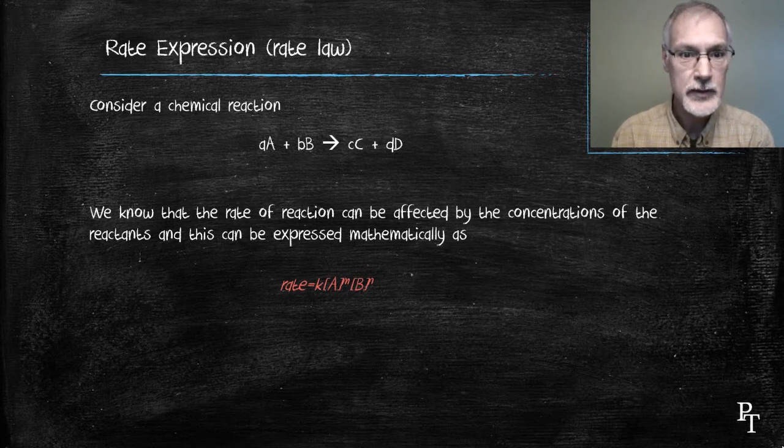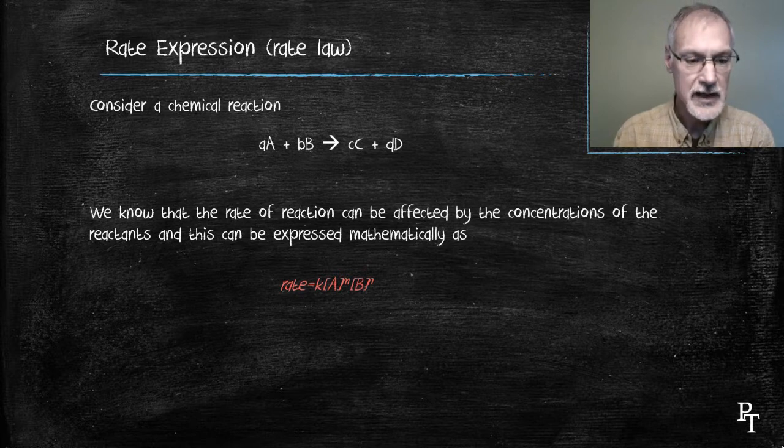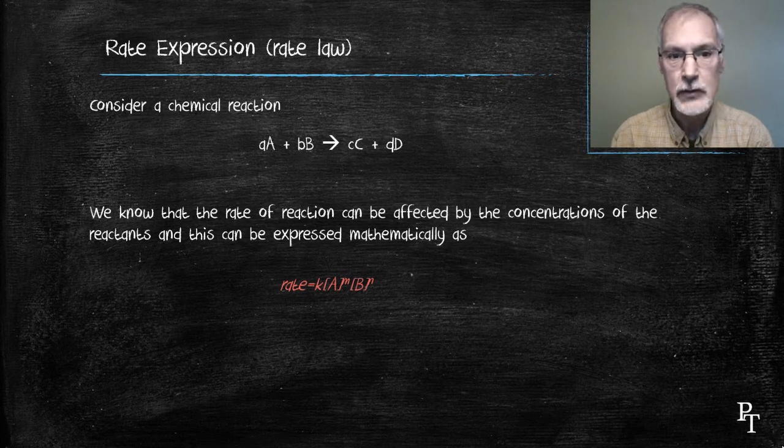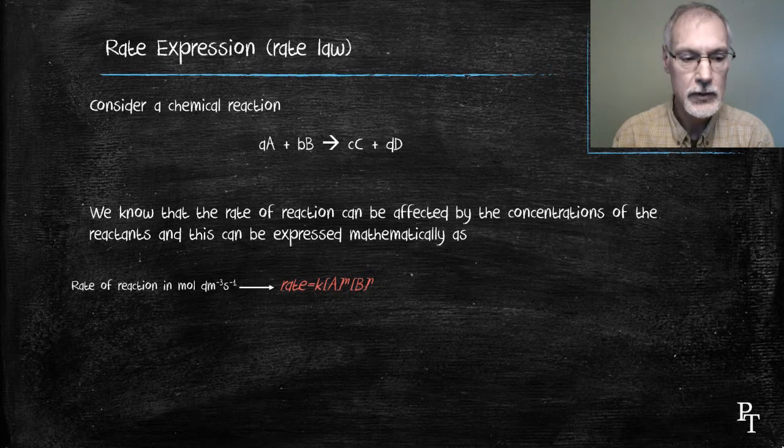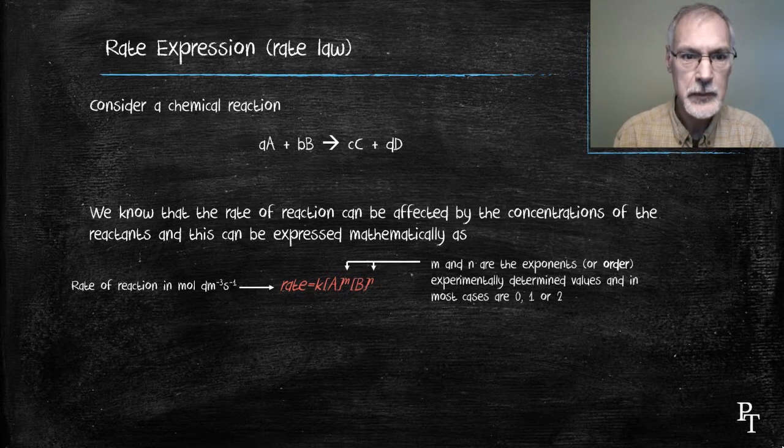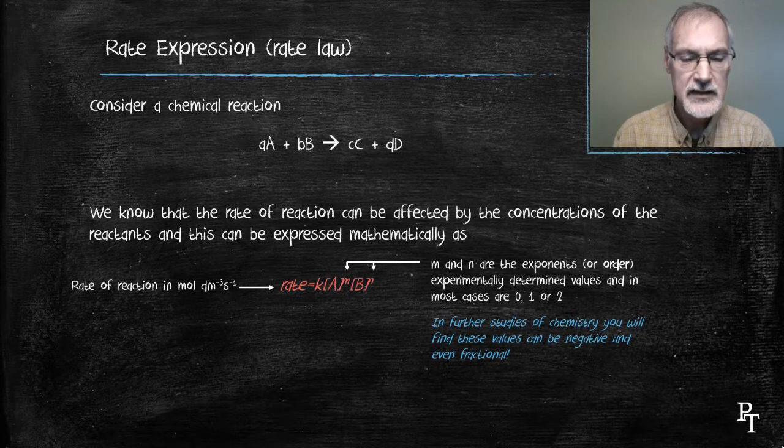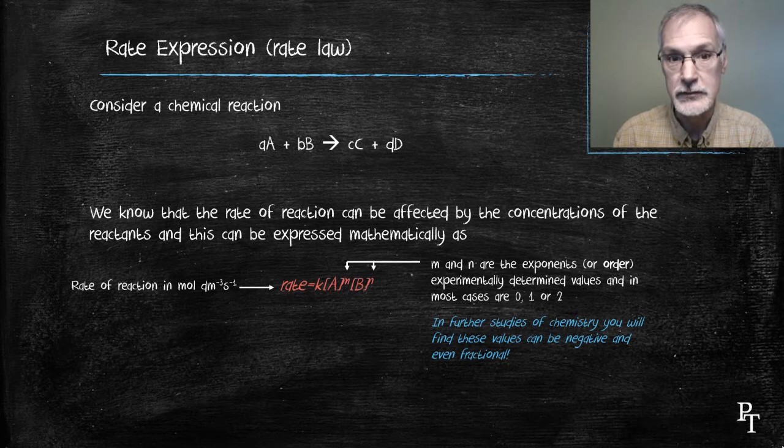The rate expression is something that incorporates all of these. First off, we have the rate, typically measured in moles per liter per second, or moles per decimeter cubed per second. We have two experimentally determined exponents, M and N. These generally take on the values of 0, 1, or 2.